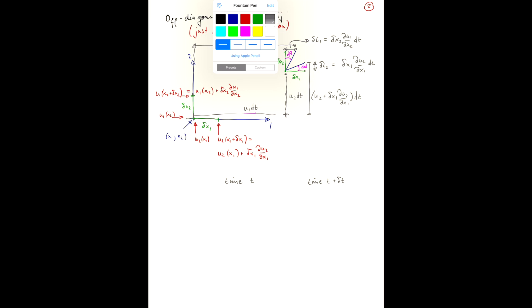So we can calculate our angles using simple geometry, namely tan of d beta is approximately d beta by small angle approximation. And that is just 1 over delta x2 times delta x2 du1 dx2 dt, which is just du1 dx2 dt since the delta x2 cancel. Similarly, d alpha is just du2 dx1 dt.